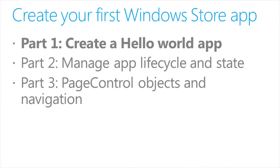In part two, manage app lifecycle and state, we'll discuss the app lifecycle and we'll extend the Hello World app by storing app data in Windows roaming settings and saving session state data using the WinJS application session state object. In part three, page control objects and navigation, we'll migrate our app to use the navigation app template and page control objects and we'll add an app bar to navigate between pages using the WinJS navigation service.